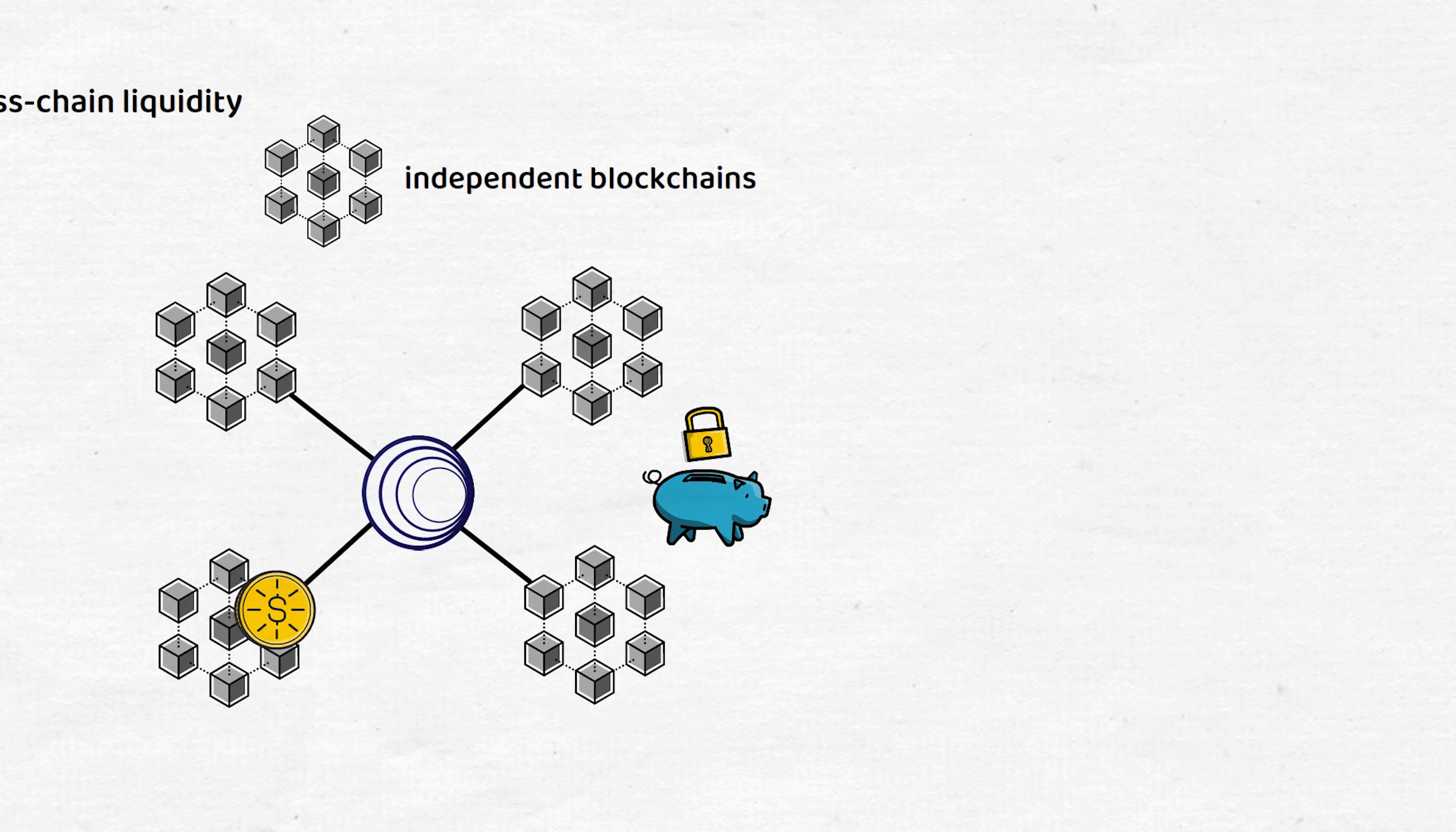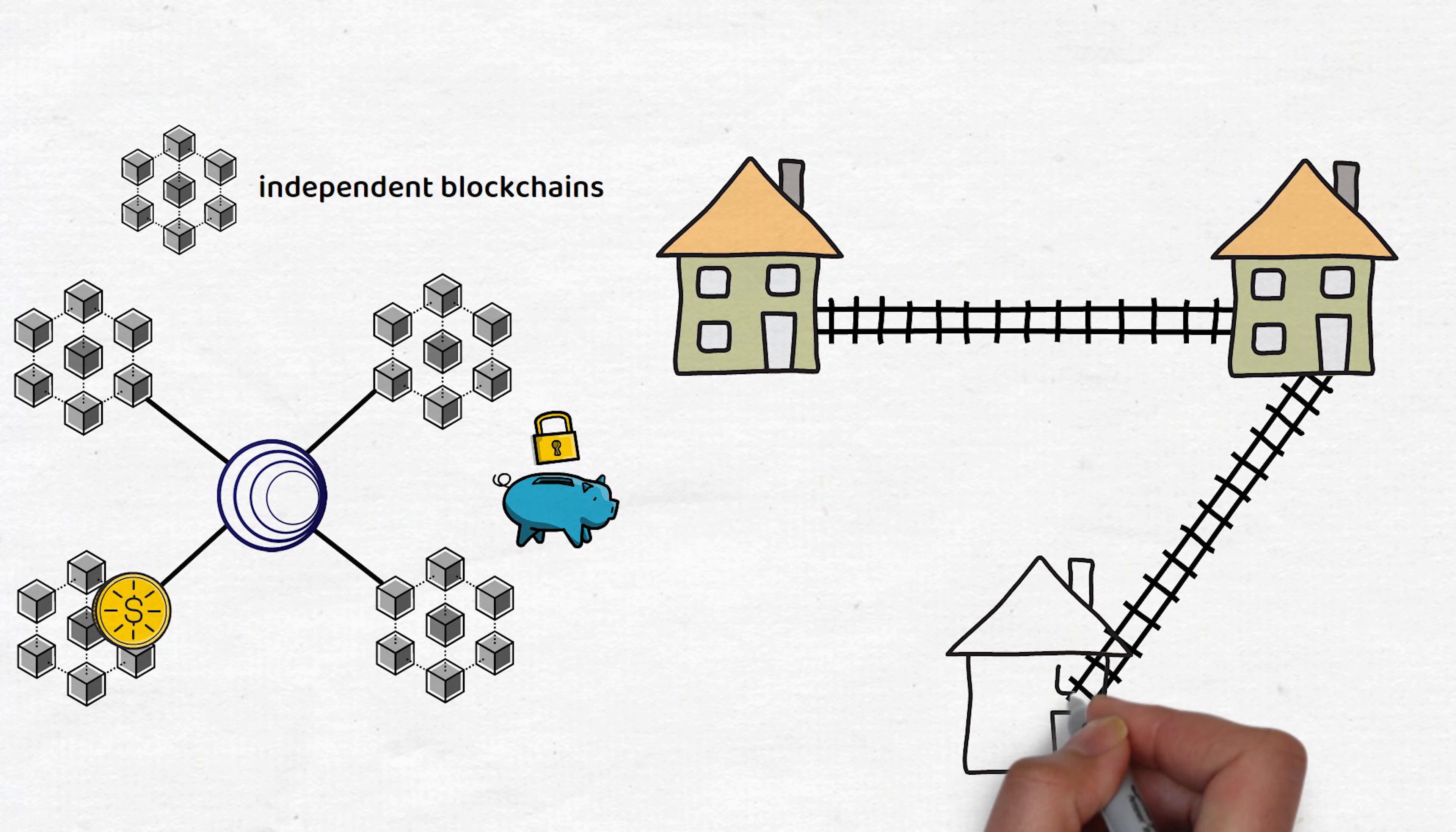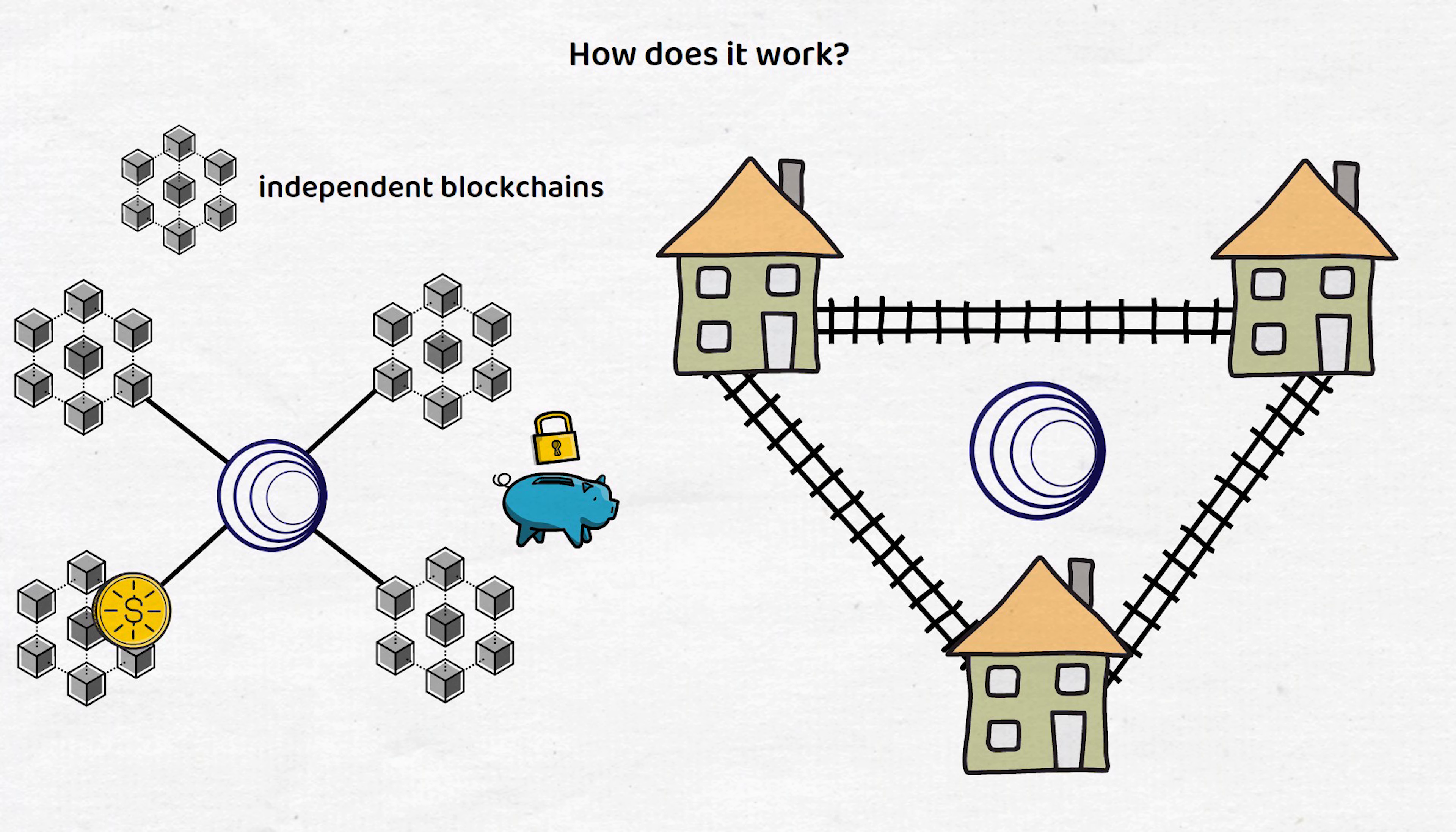This means Wormhole can best be imagined as a series of train lines connecting cities, with each station representing a separate blockchain network. But how does it work exactly?